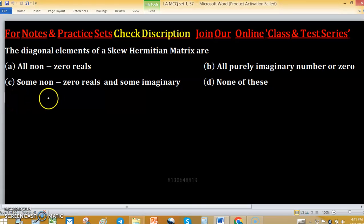The diagonal elements of a skew Hermitian matrix - for diagonal matrix, Aij, sorry, Aii equals to negative of Aii conjugate. This is the condition for diagonal elements.